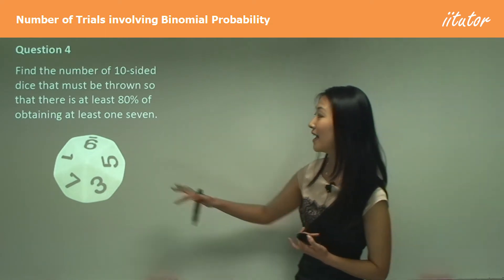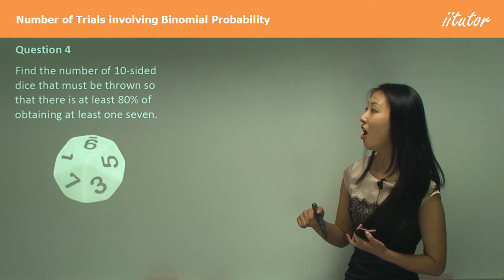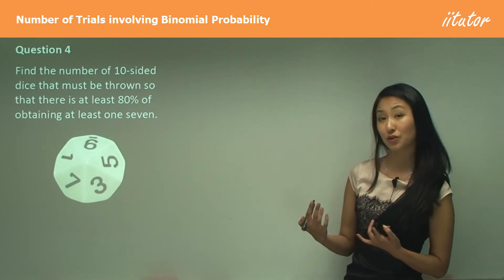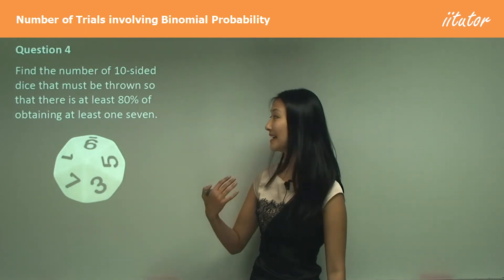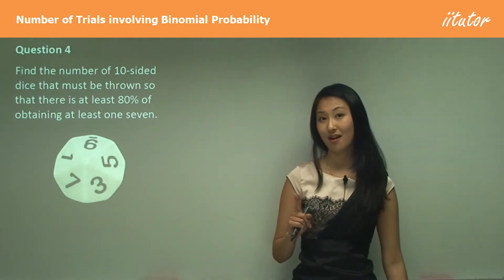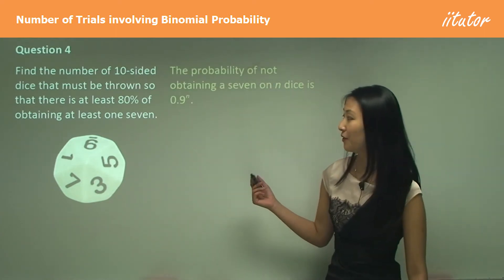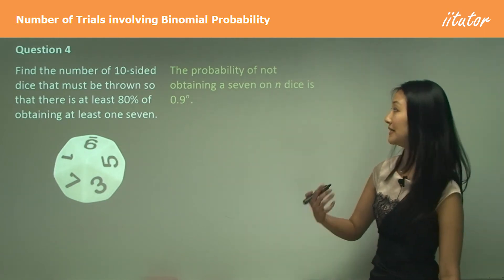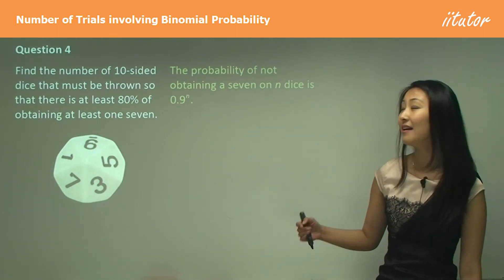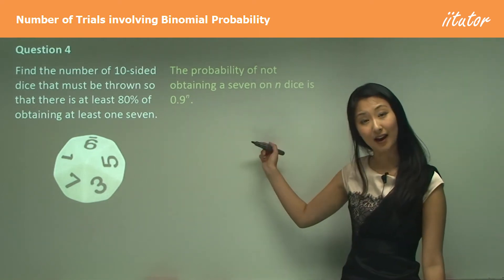Here we have a 10-sided dice. We want to find the number of 10-sided dice that must be thrown so there is at least an 80% chance of getting at least one seven. First of all, because it's a 10-sided dice, what's the chance that you're going to get one seven? Well, it'll be 0.1. So the chance of getting no seven is going to be 0.9.